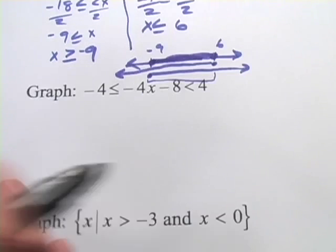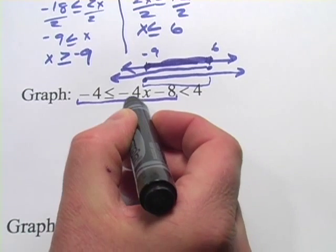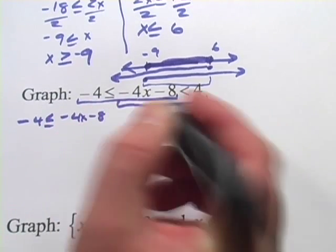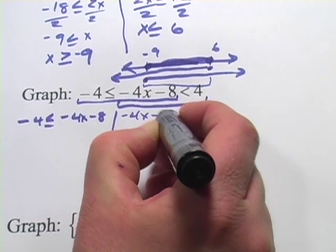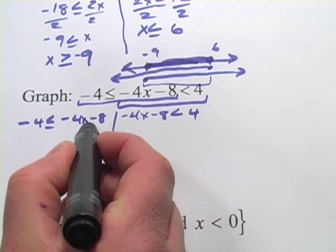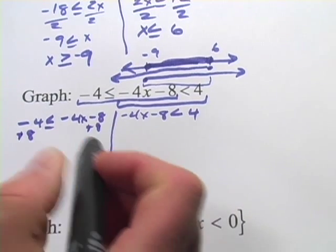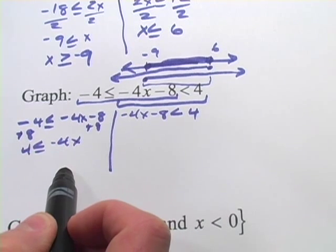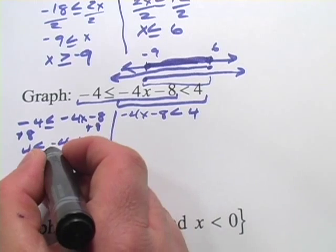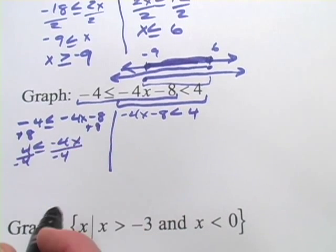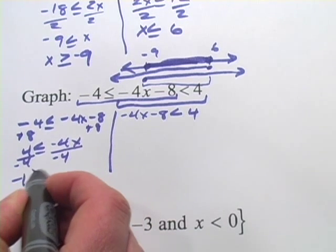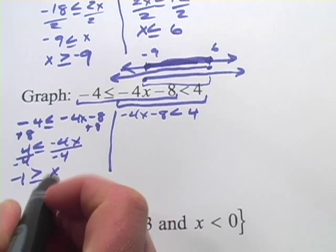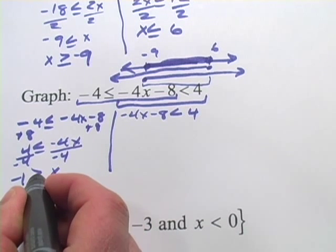Let's try another one — this one's slightly more tricky. I'll split it into two problems: negative 4 is less than or equal to negative 4x minus 8, and negative 4x minus 8 is less than 4. First I'll add 8 to both sides to get the x term alone, giving positive 4 and negative 4x. Now I divide by negative 4 — remember, when you divide an inequality by a negative number you flip the sign — so this becomes negative 1 is greater than or equal to x, or written the comfortable way, x is less than or equal to negative 1.